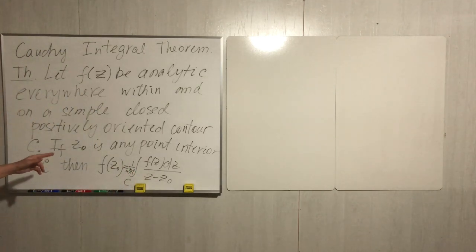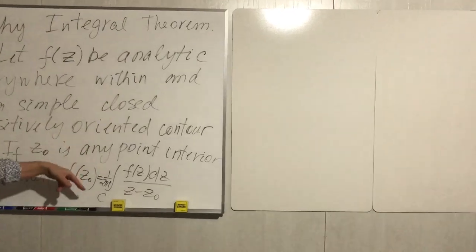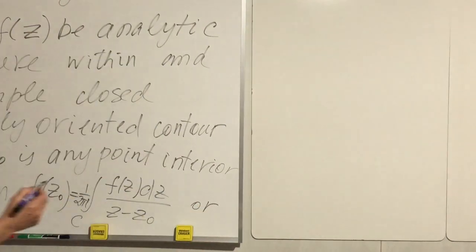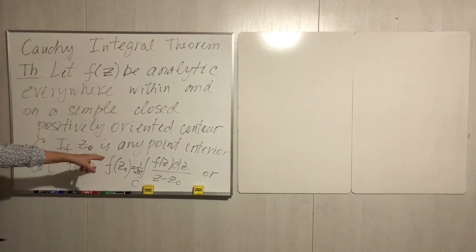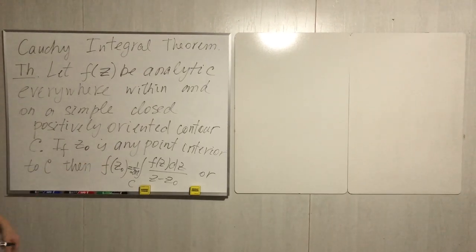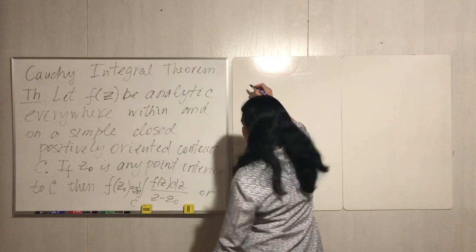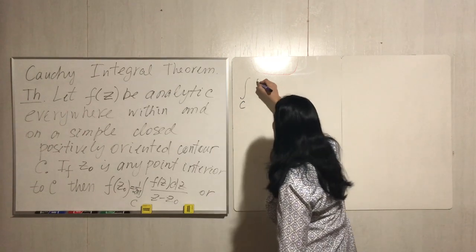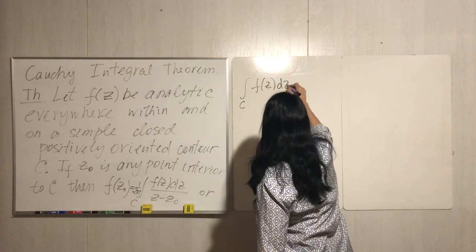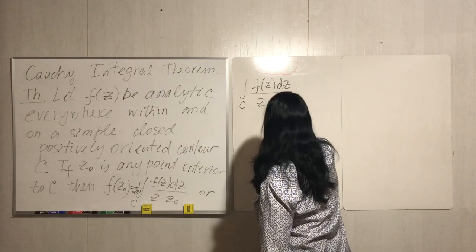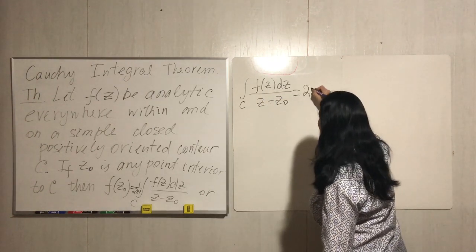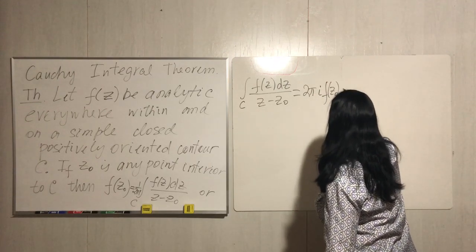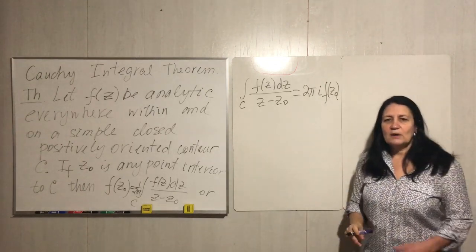We can rewrite this formula as: the integral along C of f of z dz over z minus z sub zero equals 2πi times f at z sub zero. So this is the formula we would like to prove.